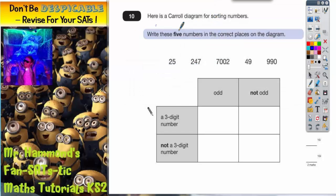Question 10. Here is a Carroll diagram for sorting numbers. Don't worry too much about this word Carroll diagram. It's just the name of the actual diagram and it's named after the person that came up with it. And all it is is a diagram to sort numbers into like a table like this.